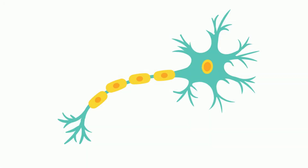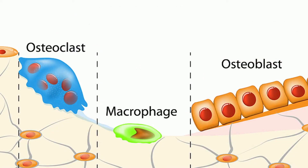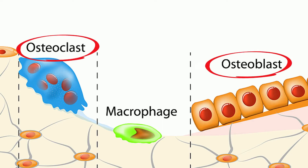Somatic cell types have different structures and functions depending on where they are located in the body. For example, bone cells are mainly categorized into two groups: osteoblasts and osteoclasts. Osteoblasts are small cells that produce proteins that promote bone growth, and osteoclasts are larger and dissolve old bone structures.